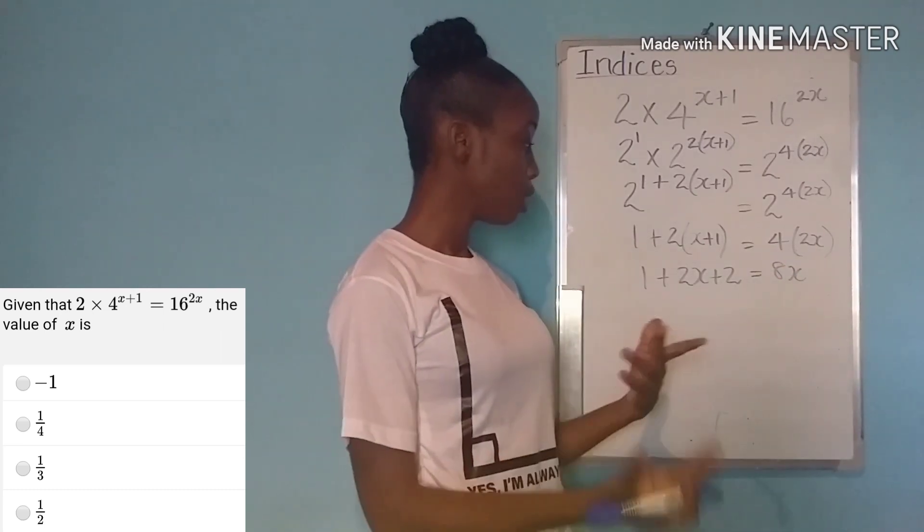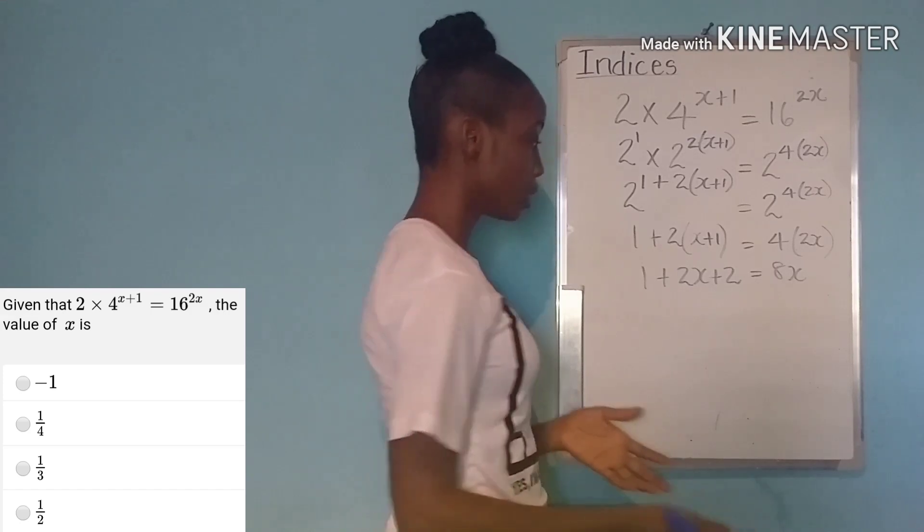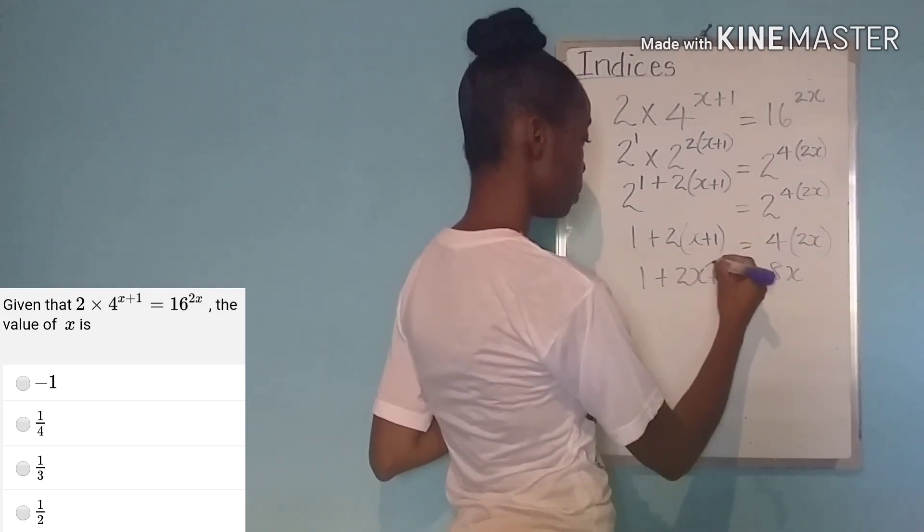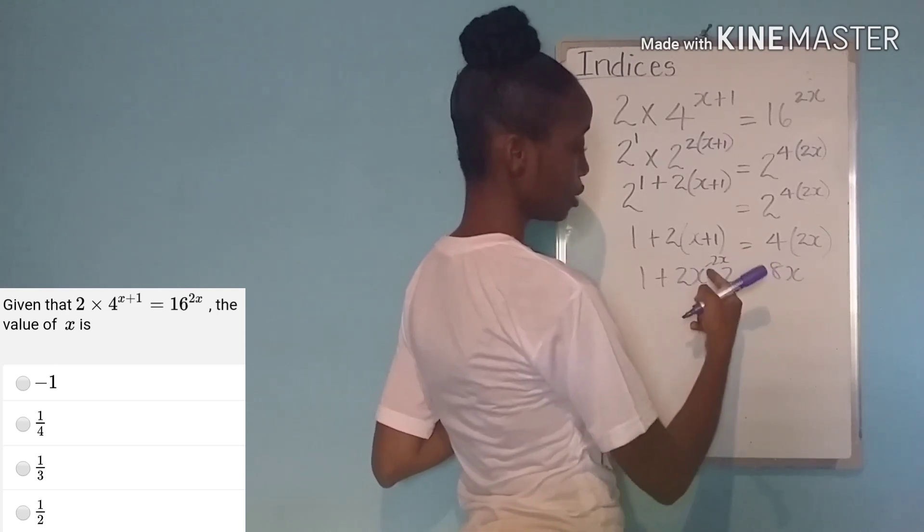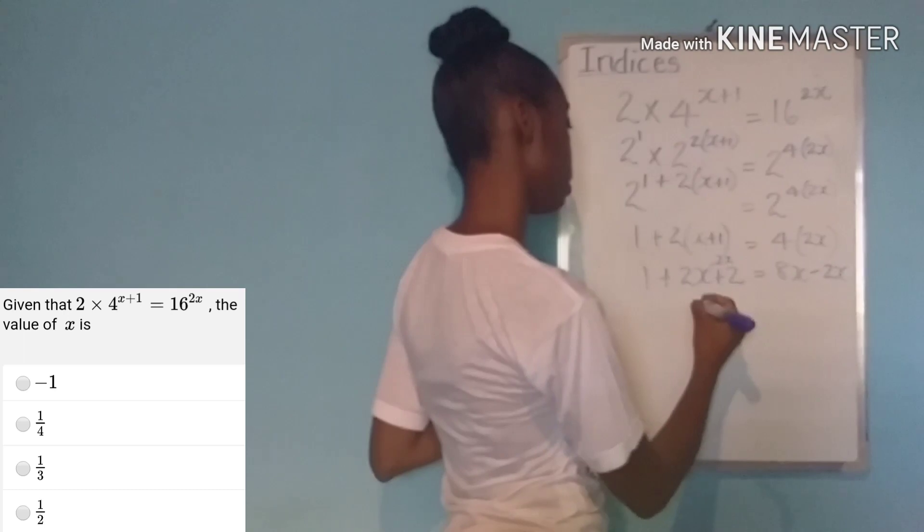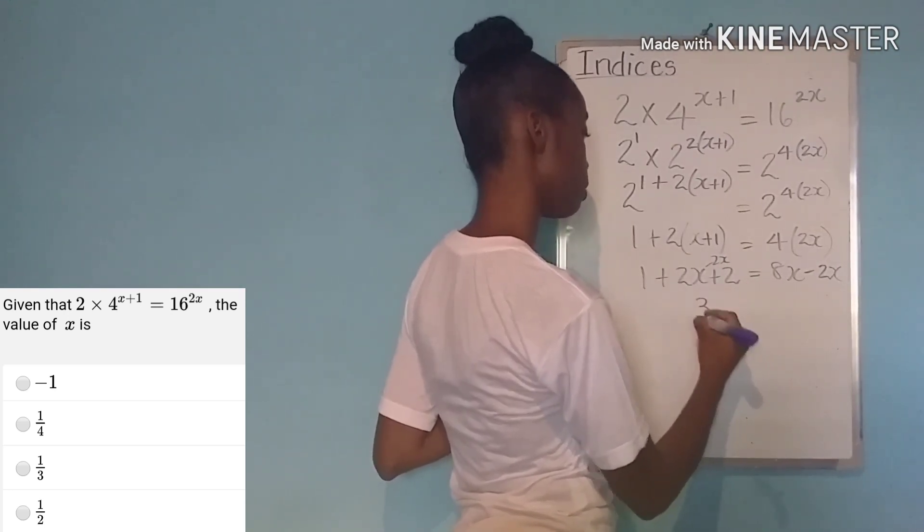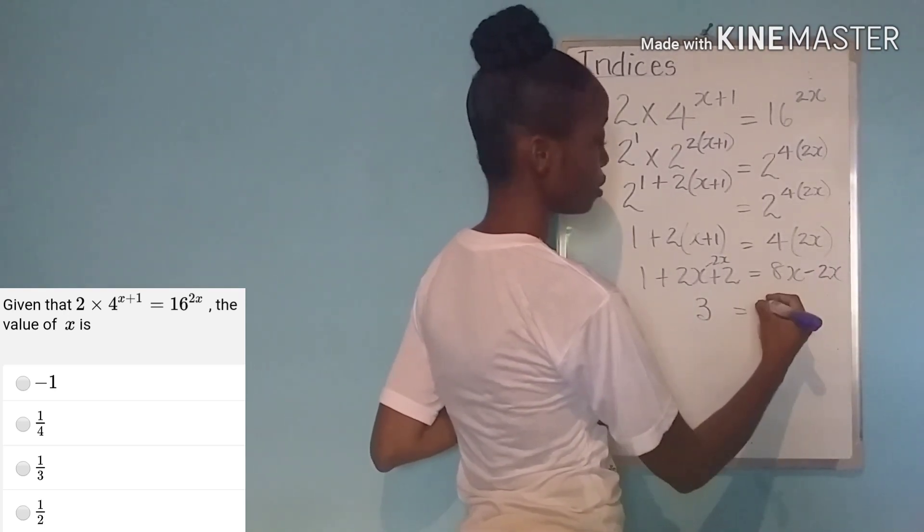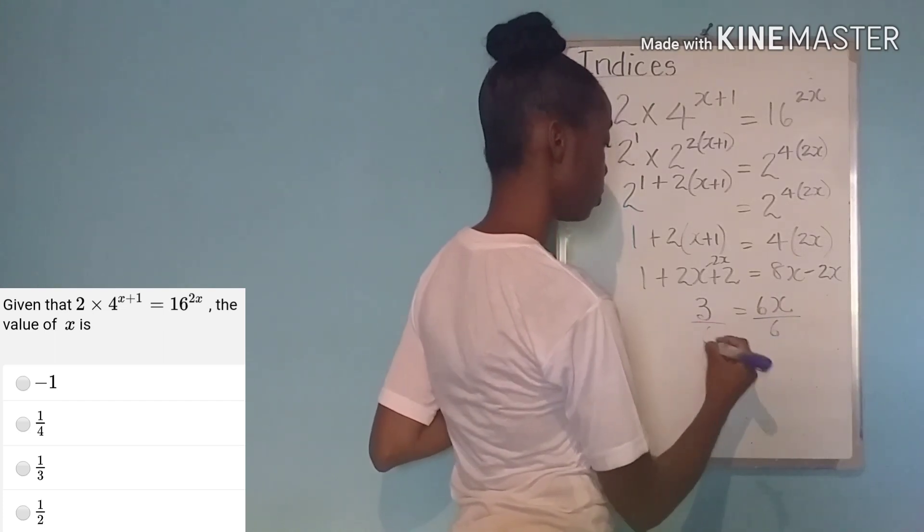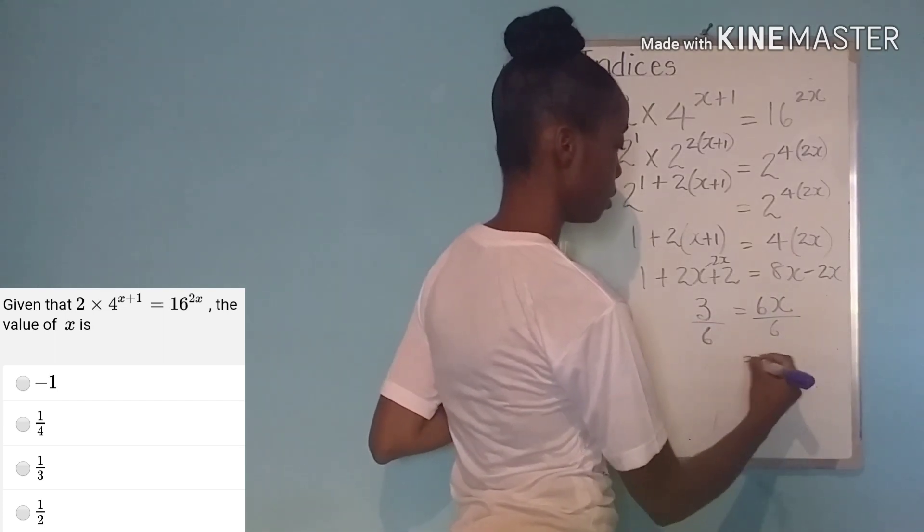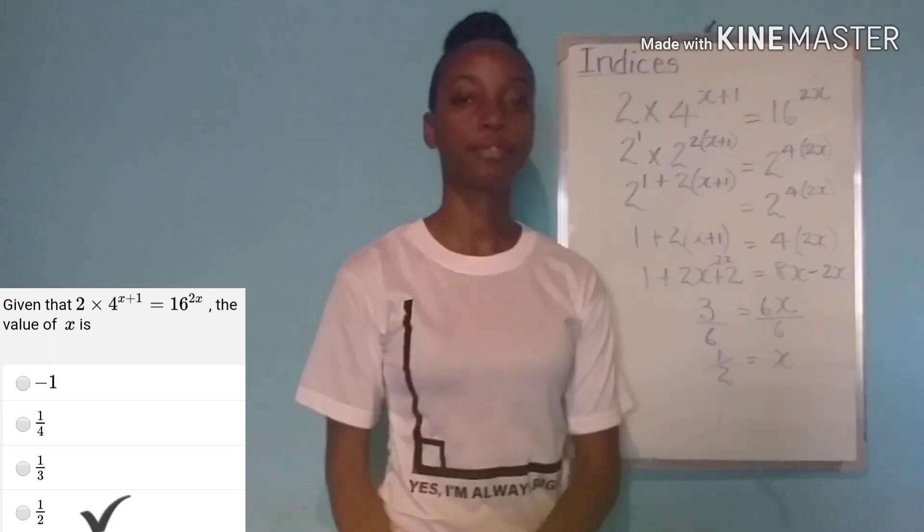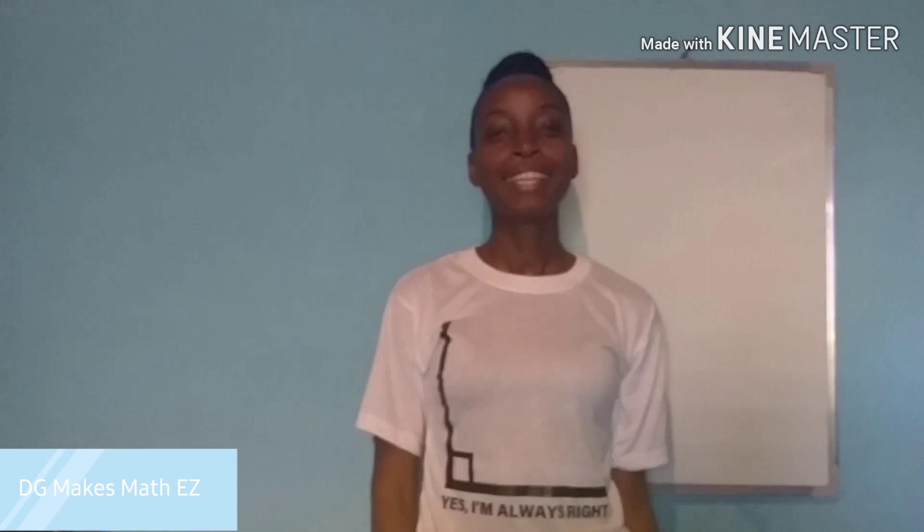Again we're going to keep our x terms on one side and our constants on one side. We can get rid of 2x from this side by subtracting. We do the same on both sides. Now we have 1 plus 2 giving us 3 equals 8x minus 2x, 6x. We need x so we divide by 6 on both sides. Now x is equal to a half. That's it.